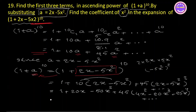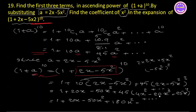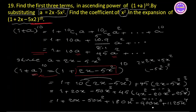Equal to 1 plus 20x minus 50x squared plus 45 times (2x minus 5x squared) squared, which gives 180x squared, minus... 1125 x to the power 4, plus and so on.